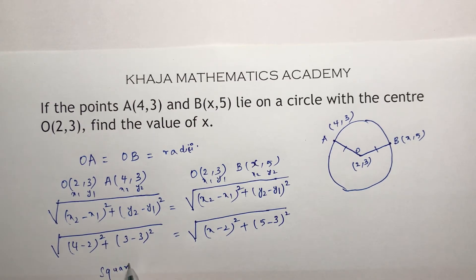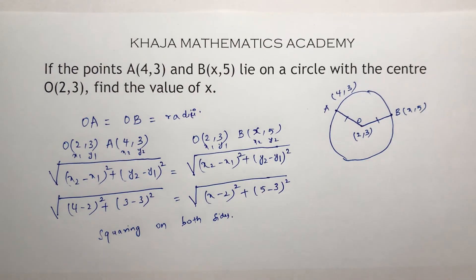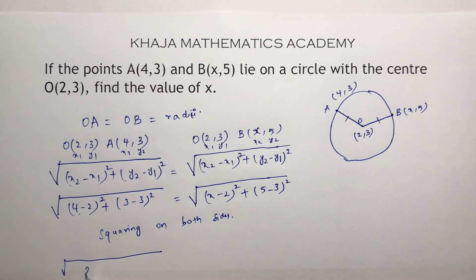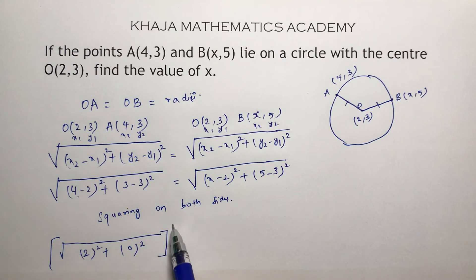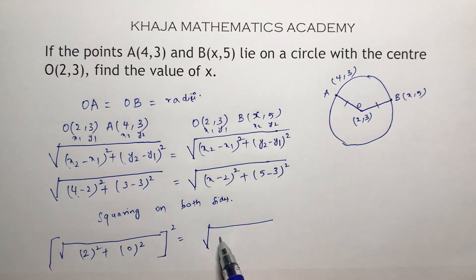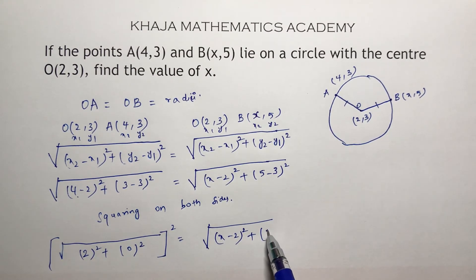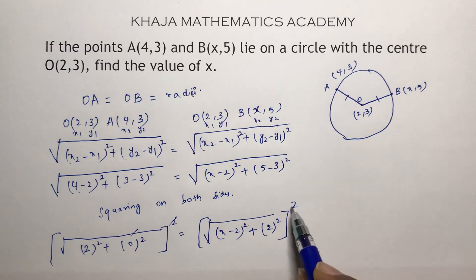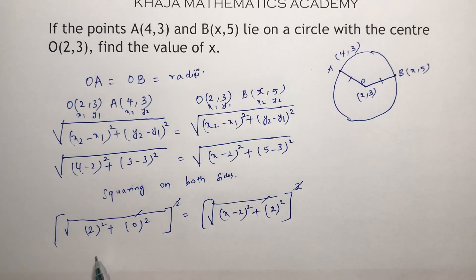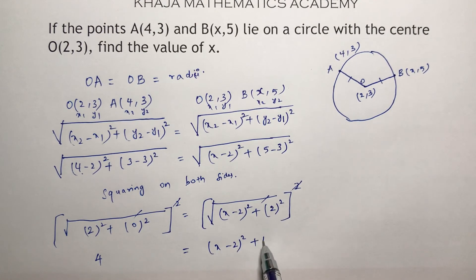Now squaring both sides. On the left: (4 minus 2) is 2 squared, plus (3 minus 3) is 0 squared. On the right: (x minus 2) whole square plus (5 minus 3) is 2 squared. The square root and square cancel, giving 4 on the left and (x minus 2) whole square plus 4 on the right.